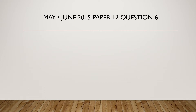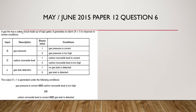Let's take a look at examples of how to draw logic circuits. We have a question from May/June 2015, Paper 1, Question 6. A gas fire has a safety circuit made of logic gates. It generates an alarm x=1 in response to certain conditions: gas pressure is correct and carbon monoxide level is too high, or carbon monoxide is correct and gas leak is detected. We have to find the associated binary values of the different inputs.